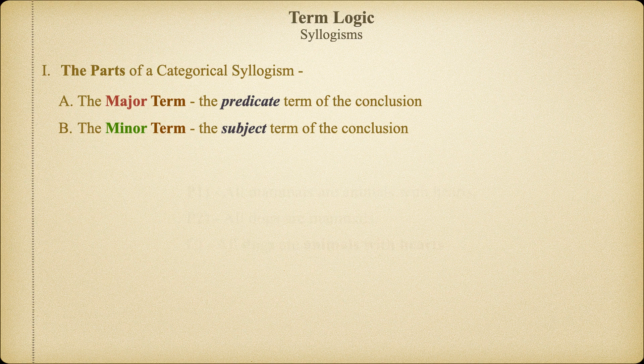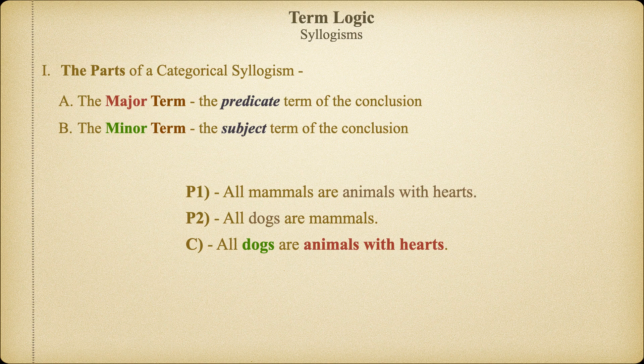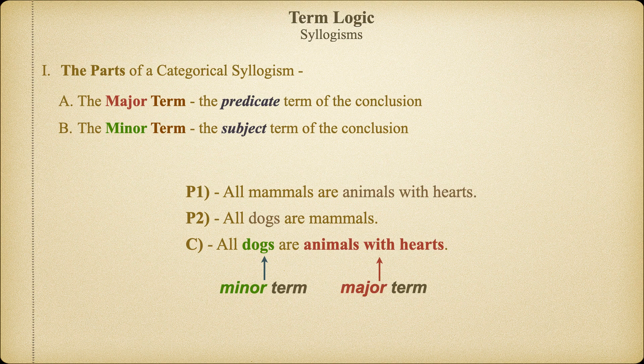Let's consider the following argument as an example. We have two premises and one conclusion. Note that each statement in the argument is a categorical proposition—in this case, all three are universal affirmatives, that is, A propositions, but they wouldn't have to be. Now, look at the conclusion. See how the subject of the conclusion, 'dogs,' is being labeled the minor term, and the predicate of the conclusion, 'animals with hearts,' is being labeled the major term.